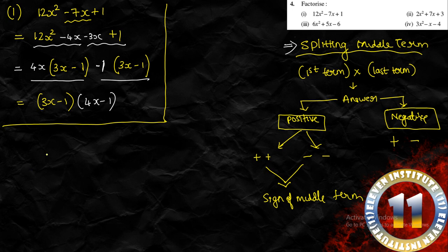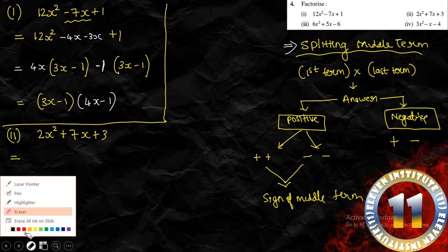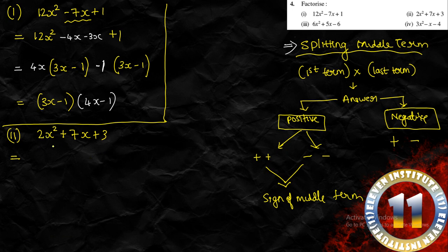Let us now solve the second polynomial: 2x² plus 7x plus 3. We multiply the first and last term: 2 multiplied by 3 gives 6. The answer is positive, and the sign of the middle term is also positive, so both factors will be positive. We need two factors of 6 that multiply to give 6 and add to give 7 — those are 1 and 6.